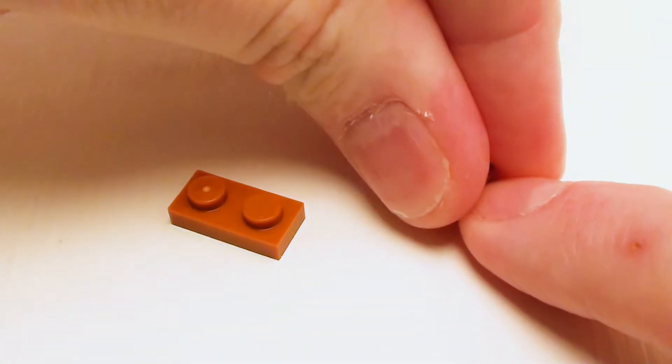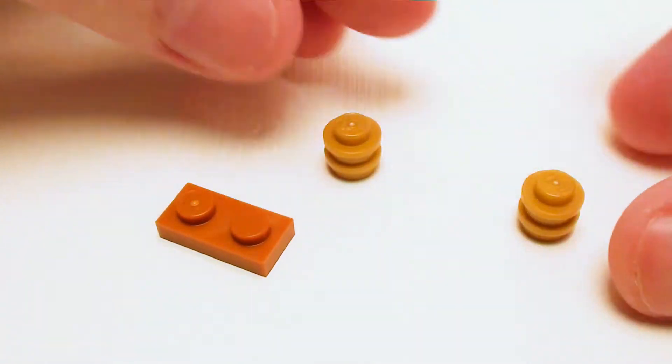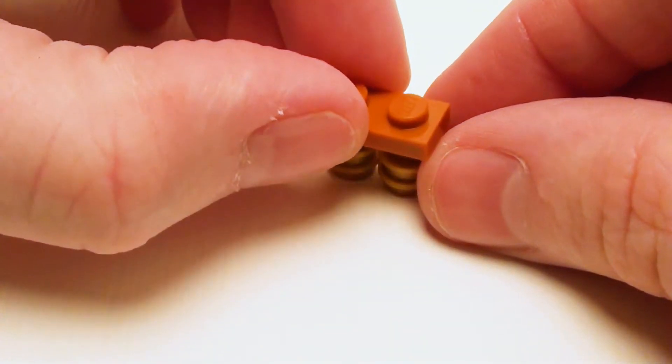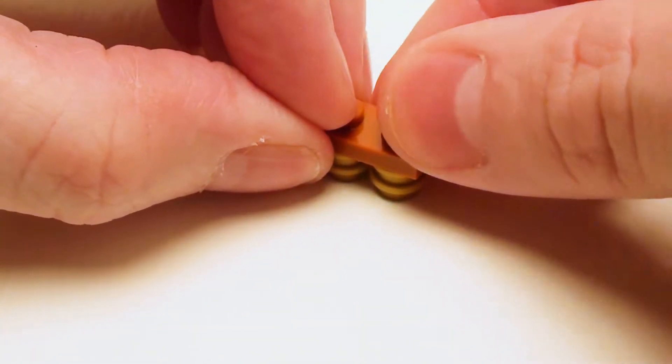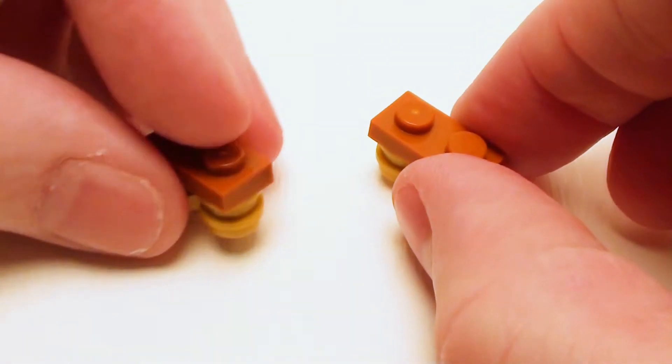We're going to place these on top of one another. Let's make two of these. And I'm going to place a 1 by 2 plate on top. We're going to make two of these.